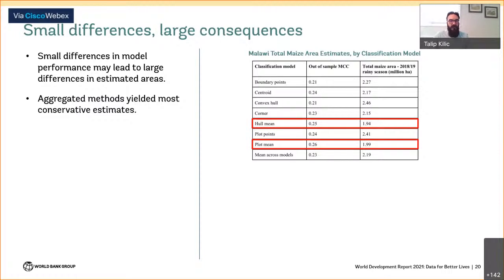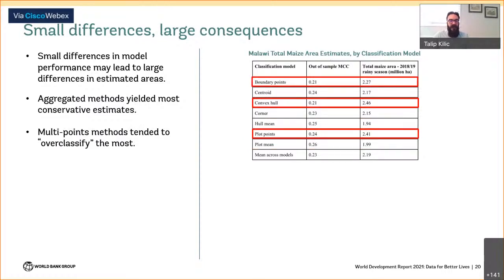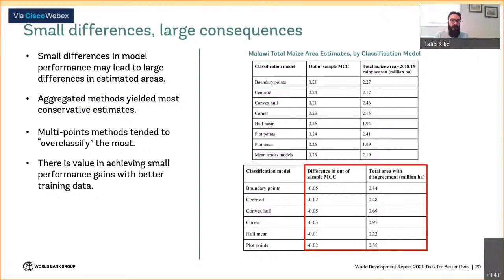Other methods tend to over-classify, and looking at measures of total area under disagreement versus the best-performing model, we see the value of achieving small performance gains with better training data. We do a pixel-by-pixel comparison across the entire country at 10-meter resolution, tallying up all pixels with discordant values for the presence of maize cultivation. Under less preferred approaches, the extent of total disagreement could range anywhere from 0.5 million to up to 1 million hectares.